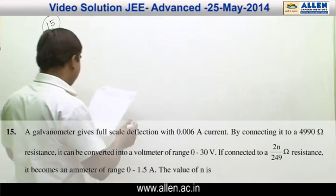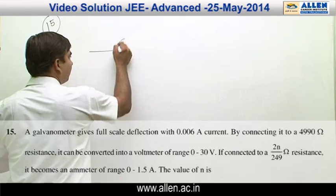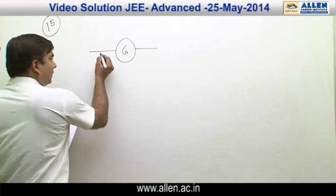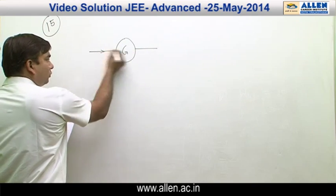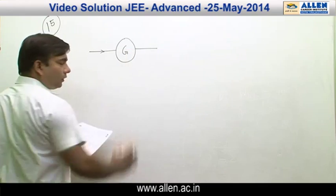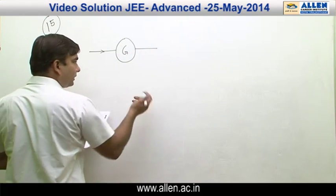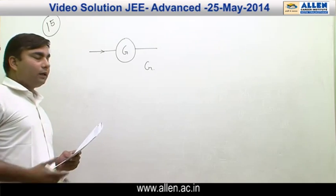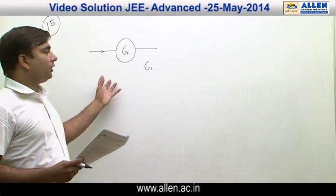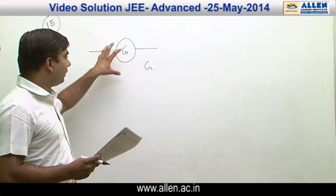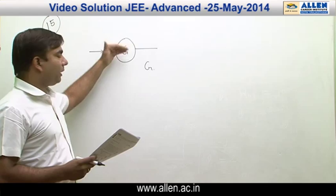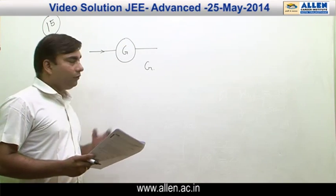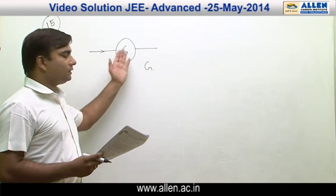The galvanometer is represented by a symbol G, and IG is the current which goes into the galvanometer causing its deflection. The resistance of the galvanometer is also represented by G. We can convert this galvanometer into an ammeter if we use a resistance in parallel to it, and into a voltmeter if we use a resistance in series to it.